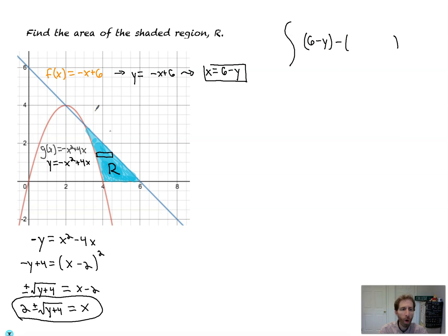it's going to be 6 minus y minus. And the question is, what is this curve here? Well, this curve is split into two parts. That's the 2 minus part. That's the minus piece of it. And this is the plus piece, the right side. So you're going to subtract 2 plus the square root of y plus 4.